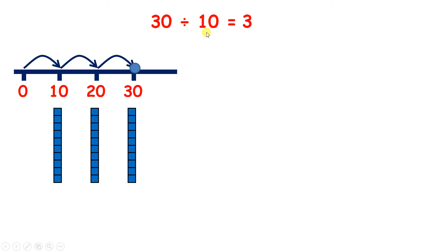But when you're dividing by 10, you don't need to use a number line. How can we easily divide by 10? Well, dividing by 10 is really another way of saying how many 10s are in a number. You know straight away that 30 is made with 3 tens, so you know that 30 divided by 10 is 3.